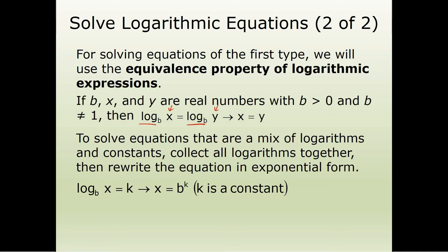However, if we have a mixture of logs and constants, we get all the logs together on one side and all the constants together on the other side. Once we've collected all the logs on one side, we collapse it down into one single log using our log rules, set it equal to one single constant, then rewrite it as B to the K equals X and solve.